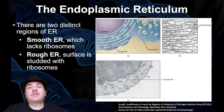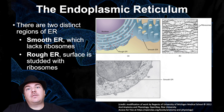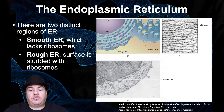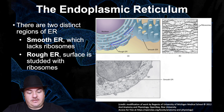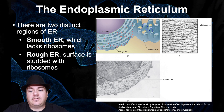The other type of ER is called smooth ER. The reason it's called smooth is because it looks smooth — because it does not have ribosomes attached to it. When you look at the rough ER, it looks like flattened sacks, like if you take a bag and flatten it. In contrast, the smooth ER does not look like flattened sacks — it's more tubular shaped, so it looks more like tubes.